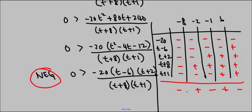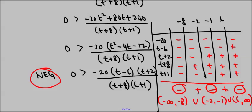And we want to know when it is negative. So that's here, here, and here. So we'll write our solution out. It goes from negative infinity to negative 8, union negative 2 to negative 1, union 6 to infinity. And that is our solution.